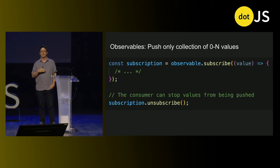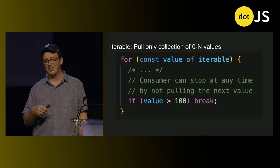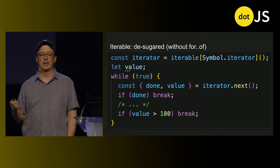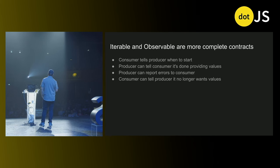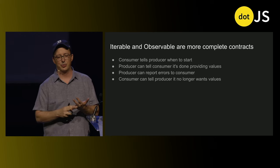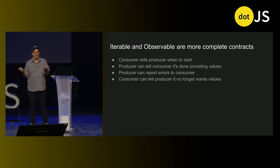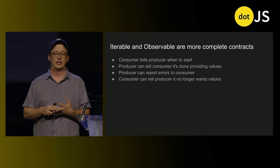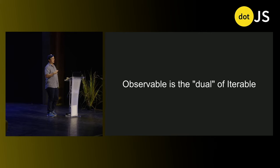Observables, if you haven't used them, are a push-only collection of zero to N values — they're kind of like an iterable, but they're pushing things at you instead of you pulling things out. An iterable is also a push-only collection of zero to N values and we consume it with for-of, which adds a lot of sugar for the underlying iterator protocol. Iterable and observable are actually more complete contracts for push and pull. In all cases you have the roles of consumer and producer doing four things: the consumer tells the producer when to start; the producer can tell the consumer when it's done providing values; the producer can report errors to the consumer; and the consumer can tell the producer it no longer wants values — break the loop, unsubscribe, whatever.